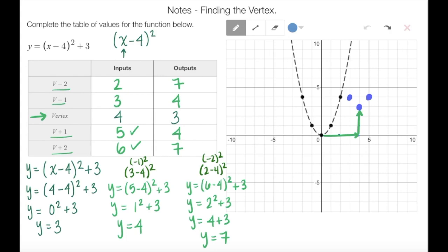Let's graph our final points here. We have 2, 7 and 6, 7. There was no stretch or shrink in this graph, so you can see that my values are almost all identical. I just shifted the graph to the right and up.